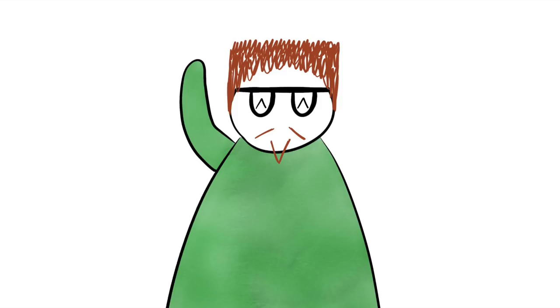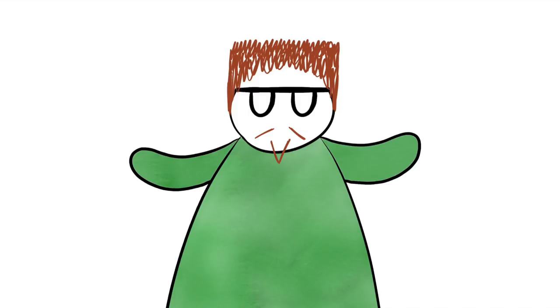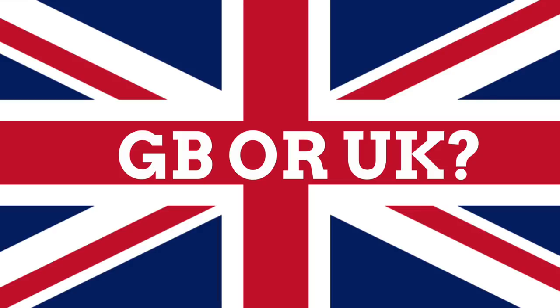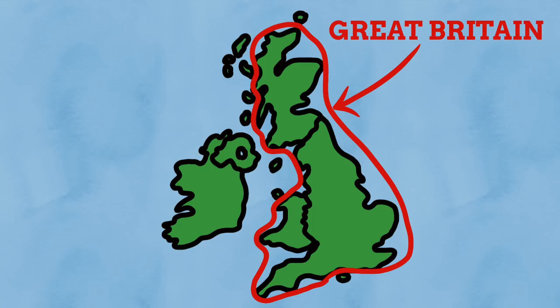If you want to find out how the UK works, then hello — we'll have to figure it out at some point. Perhaps the two terms that get confused most often are Great Britain and the United Kingdom. Great Britain is simply a geographic term for this island, which contains the nations of England, Scotland and Wales.